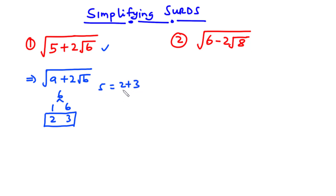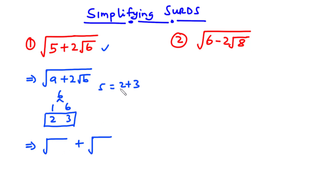Since we have two numbers adding up to give us 5, we write the square root of one number plus the square root of another. The operation here is addition, so we use addition. We introduce the two numbers: square root of 3 plus square root of 2. Always put 2 on the right-hand side. So the square root of 5 plus 2 root 6 equals root 3 plus root 2.